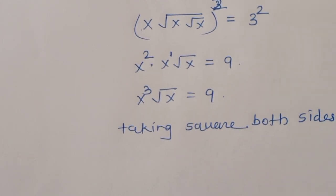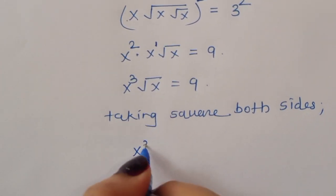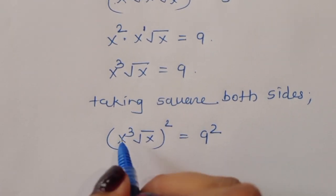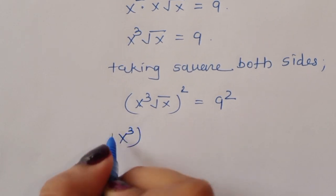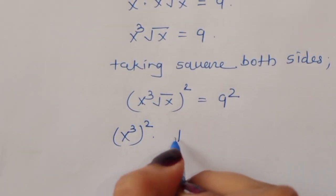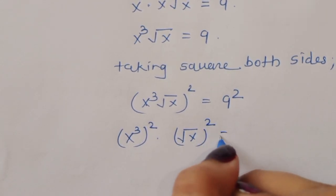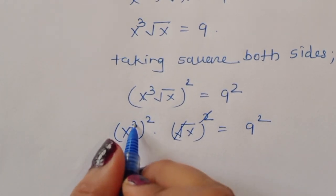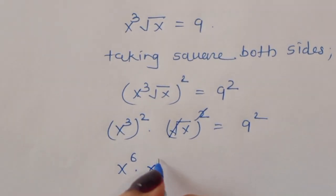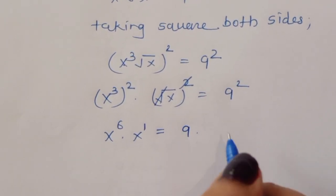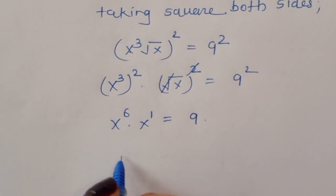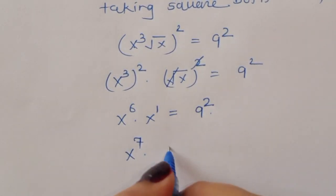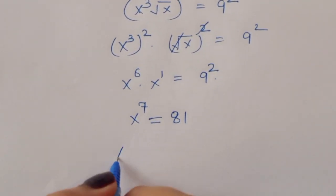Taking square both sides: x power 3 times square root of x, the whole square, equals 9 squared. Expanding: x power 3 squared gives x power 6, and the square cancels the square root leaving x power 1. So x power 6 times x power 1 equals x power 7, and 9 squared equals 81. So x power 7 is equal to 81.